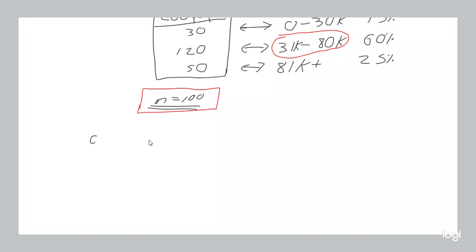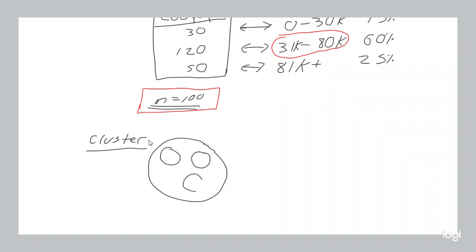Aside from stratified sampling, there's cluster sampling. In cluster sampling, rather than separating the population into groups you expect will behave differently, you separate them into groups you expect will behave the same. Visually, if your population is divided into several sections and you expect all sections to behave the same, you just pick one of them — that's your sample. You don't need to sample the others because you expect the same response from each.